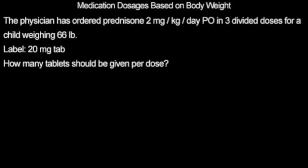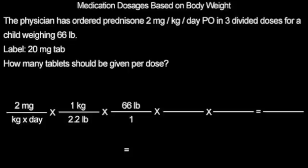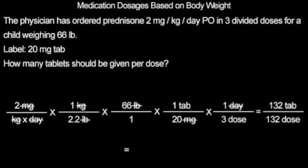Next we will look at calculating dosages based on body weight. The physician has ordered prednisone 2 milligrams per kilogram per day by mouth in 3 divided doses for a child weighing 66 pounds. The label states that prednisone comes in 20 milligram tablets. How many tablets should be given per dose? We start our equation with the desired 2 milligrams per kilogram per day. Knowing that the child's weight is in pounds, we then convert from kilograms to pounds. The child weighs 66 pounds. Prednisone comes as 20 milligrams per one tablet, and we split into 3 doses throughout the day. We cancel like terms and multiply across. We are left with 132 tablets over 132 doses. We divide and get 1 tablet per dose.